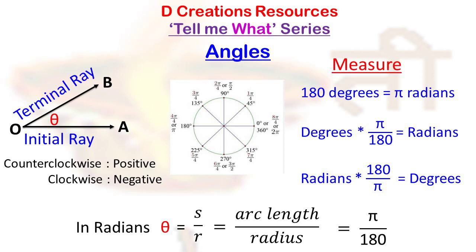So can you now convert the angle π by 4, which is given in radians, to degrees? Yes, so it is going to be π upon 4 into 180 upon π. So the answer is just going to be 180 divided by 4, which is 45 degrees.